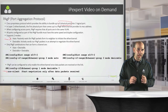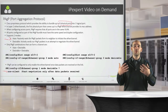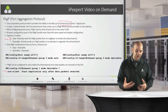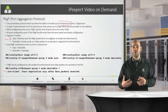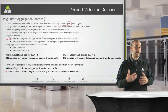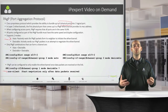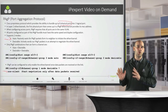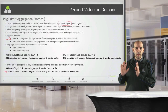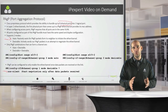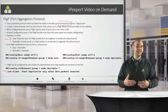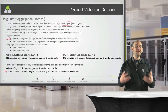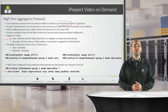Configuring these EtherChannels works essentially the same as static mode 'on', except they use the transmission of PAGP packets back and forth. I have a packet capture already saved that I'll show you between the two switches, but first let's get into the configuration and look at the CLI commands — especially if you're studying for something like your CCIE lab.